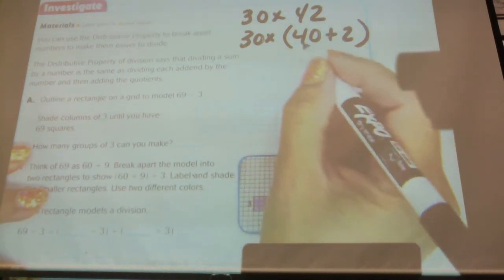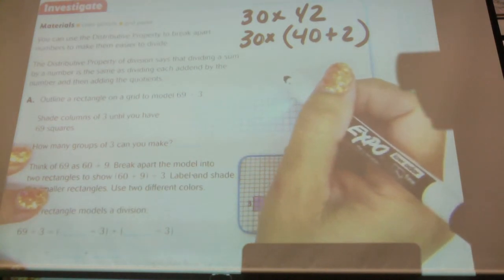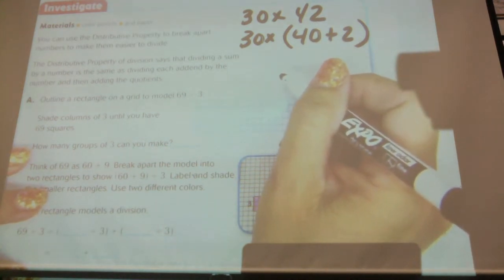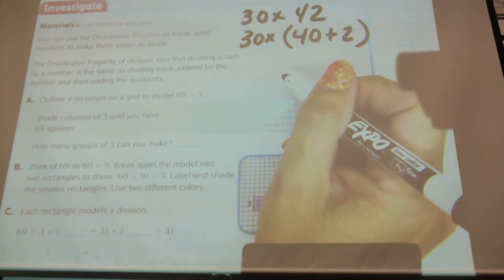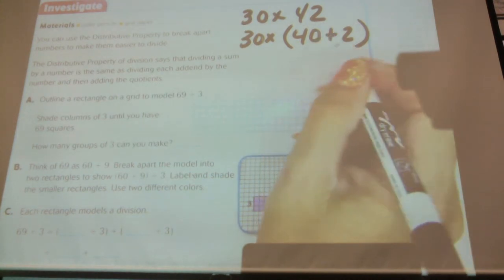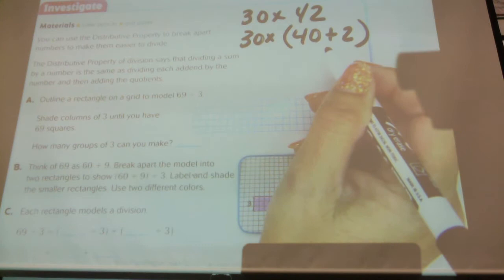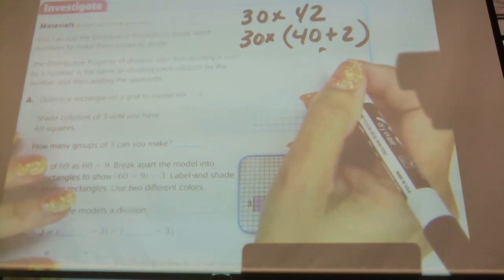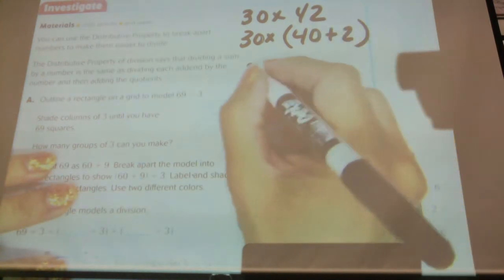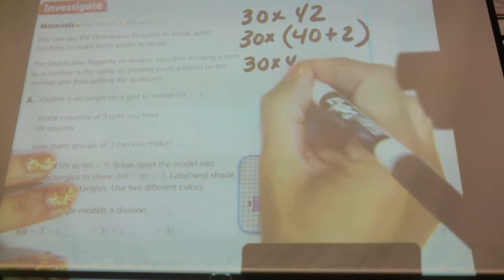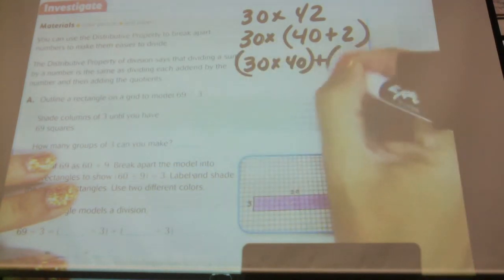What does the distributive property tell me I can do? What does the distributive property tell me I can do with this now? Come on, be brave. You can do 30 times 40 and 30 times 2 and add what your answer is.